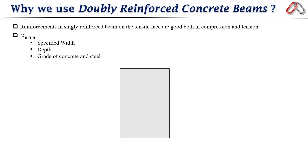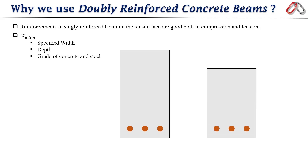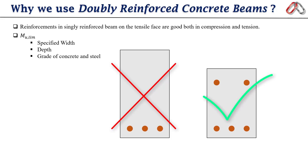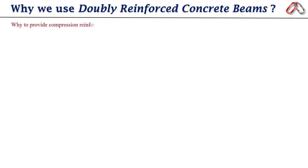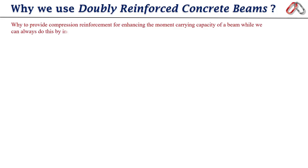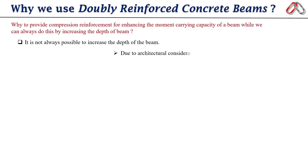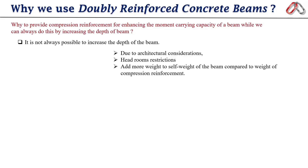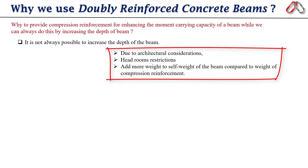There are two ways to increase the moment carrying capacity of a beam: either we increase the depth of the beam, or we provide steel reinforcement in the compression side. Generally the latter is preferred. It is not always possible to increase the depth of a beam due to architectural considerations, headroom restrictions, and because increased depth adds more weight to the self-weight of the beam compared to the weight of compression reinforcement.